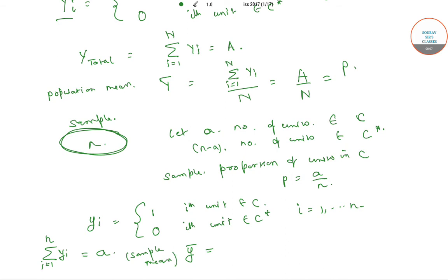The sample mean y bar equals the summation from i equals 1 to small n of yi, divided by small n, which equals small a by n, which equals small p. So our sample mean equals p.